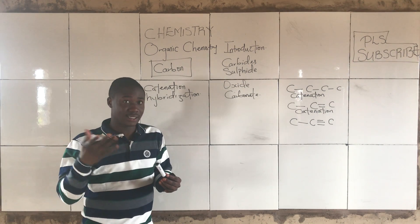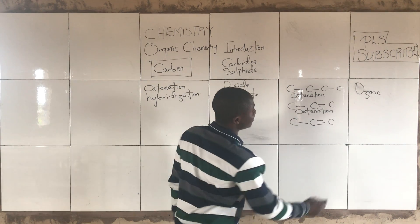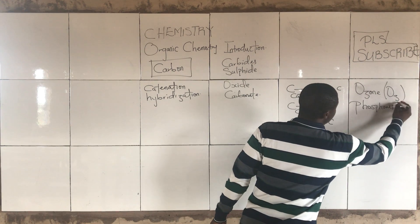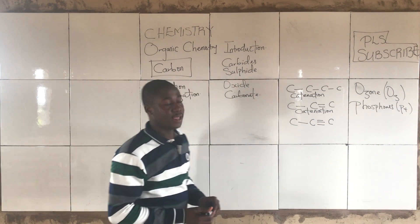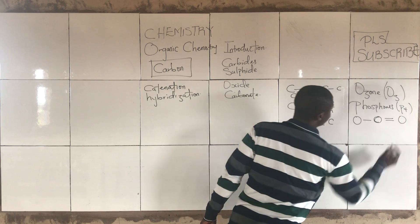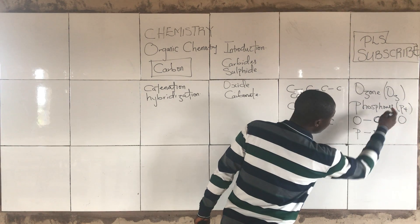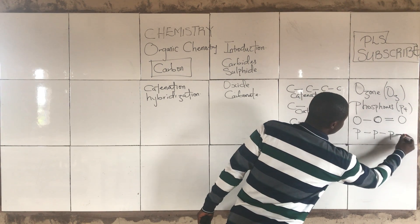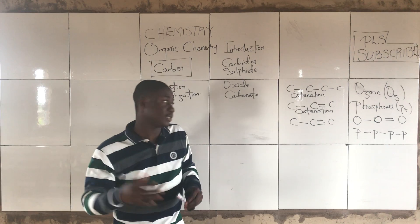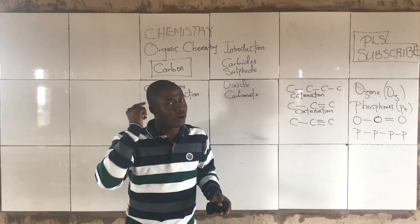Other elements can also catenate, like ozone — which is O3 — and even phosphorus, which is P4. But carbon remains the most extensive catenator in organic chemistry.